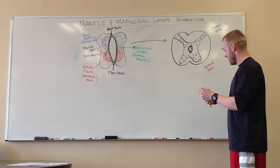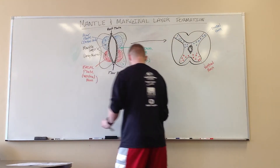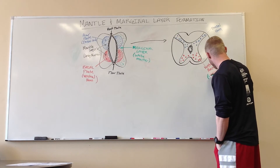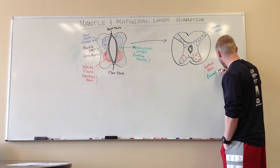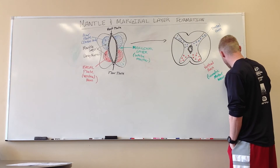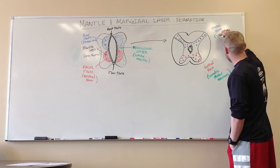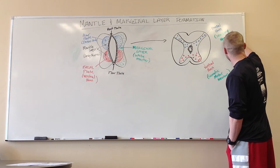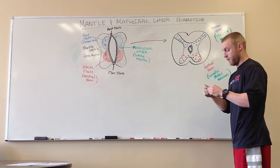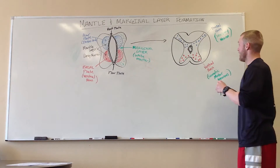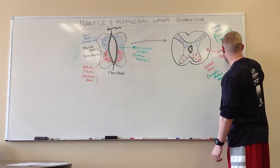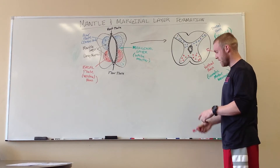Associated with those two: at the ventral horn you pretty much have your somatic motor neurons, and at the dorsal horn you'll have your sensory neurons. To recap: the mantle layer is the gray matter, and the white matter comes from our marginal layer.